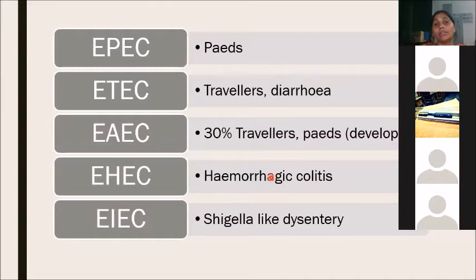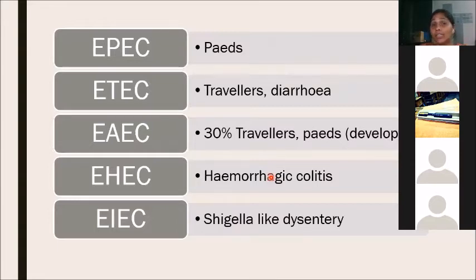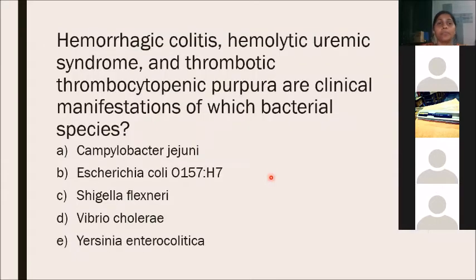EAEC sometimes causes outbreaks as well. EHEC is associated with hemorrhagic colitis. Unlike EHEC, EIEC does not carry Shiga toxin — it causes disease purely through bacterial invasion.